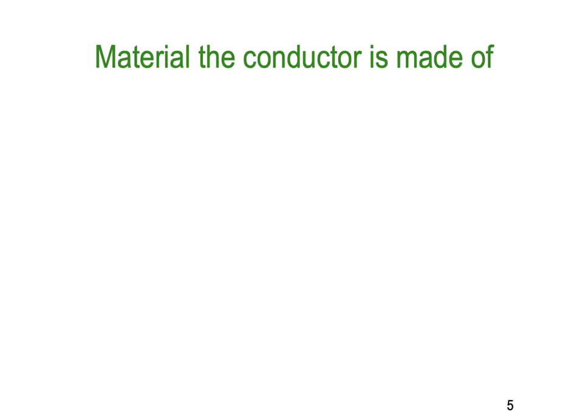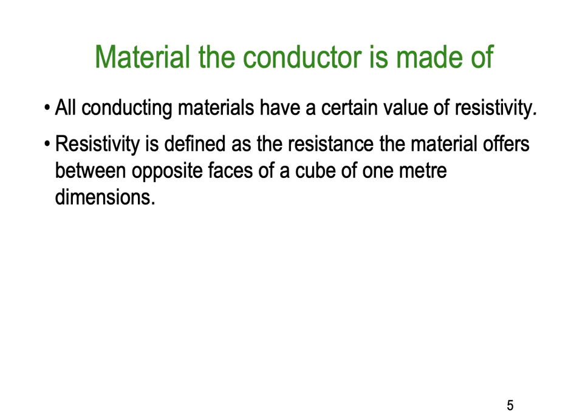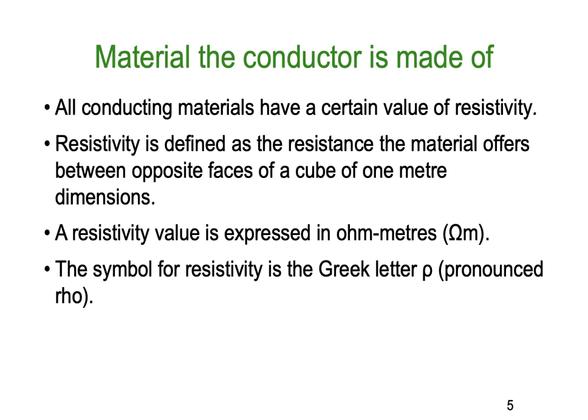Let's look at the material a conductor is made from. All conductive materials have a certain value of resistivity, or resistive value. Resistivity is defined as the resistance the material offers between opposite faces of a cube of one metre dimension. A resistivity value is expressed in ohm metres. The symbol for resistivity is the Greek letter rho — it looks like a lowercase p, and we use a lowercase p most of the time, but it's pronounced rho.